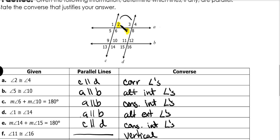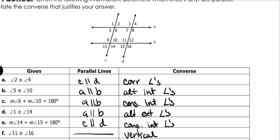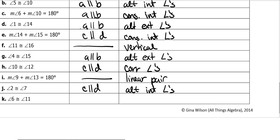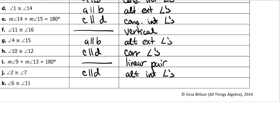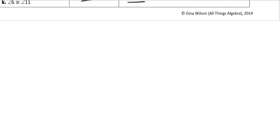And then angles 6 and 11: angle 6 is made up of this line and this line; angle 11 is made up of this line and this line. Because neither of them overlap, there's no transversal, which means they don't relate to each other at all and do not prove that they are parallel. So this one is nothing — we can't prove that. And that's the end of your notes.